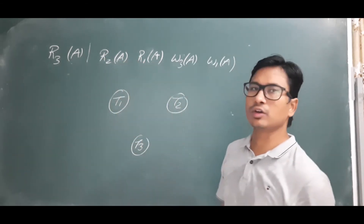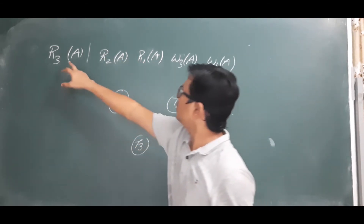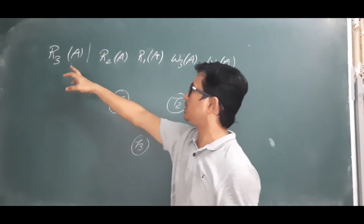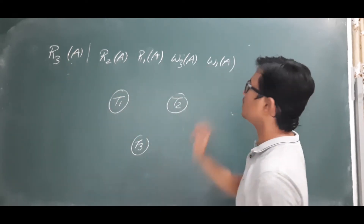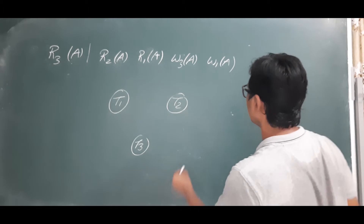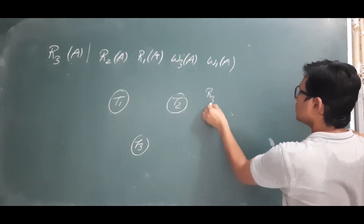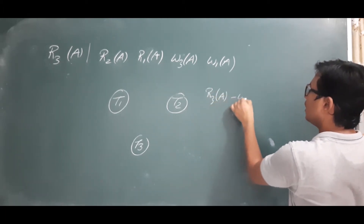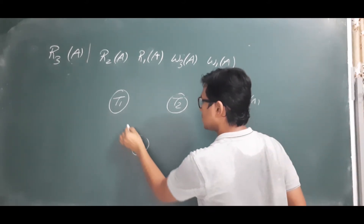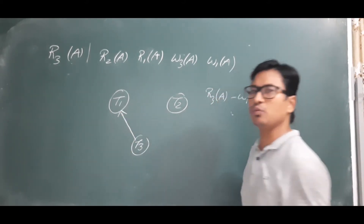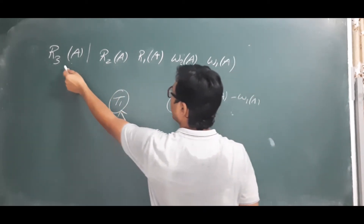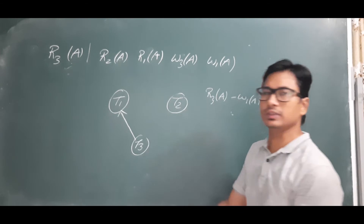This is also not a conflict — that belongs to the same transaction. But R3(a) and W1(a) — that is a conflicting operation. It is a read on transaction 3 and a write on transaction 1, on the same data item A. So there should be an edge from T3 to T1. We have now found all conflicting operations with R3(a).